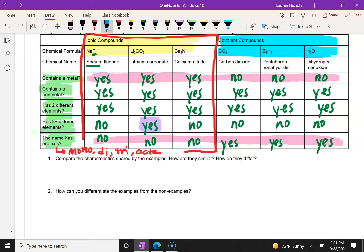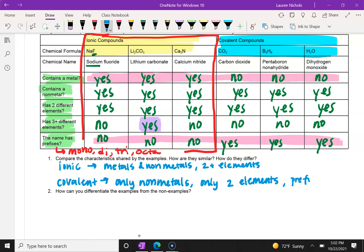So as we look at this, compare the characteristics shared by the examples. So we can say that ionic compounds have metals and nonmetals, and they can have two or more elements. But our covalent compounds, they have only nonmetals because they do not have metals at all. And they have only two elements. They can't have more. And they have prefixes in their name. So this is kind of our summary.